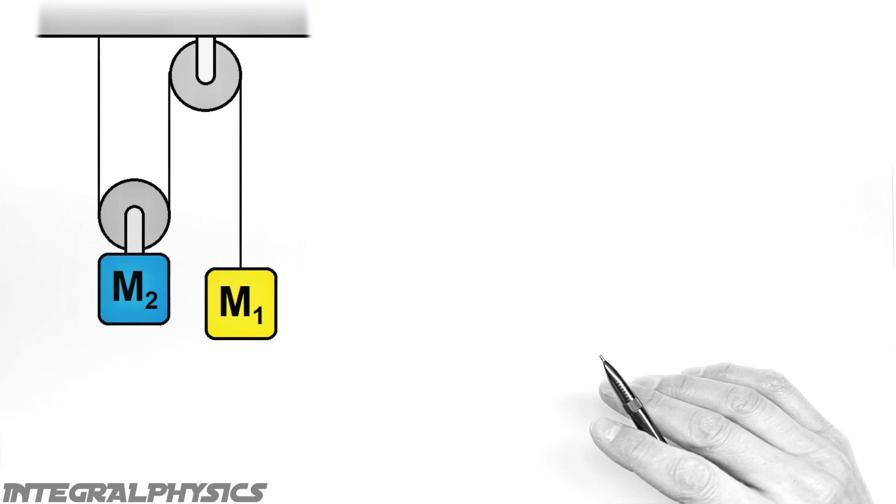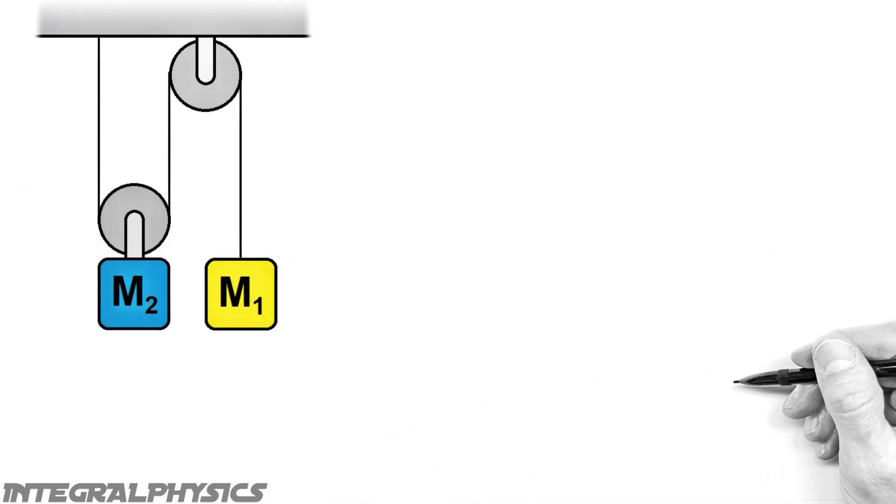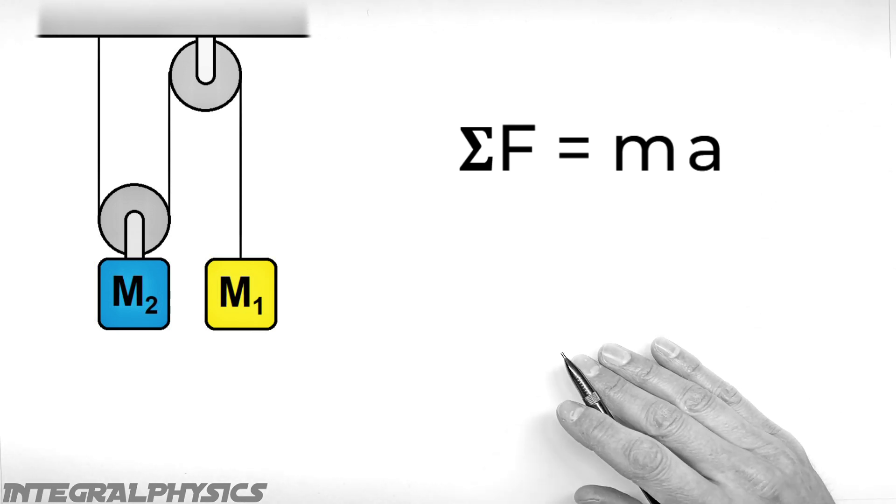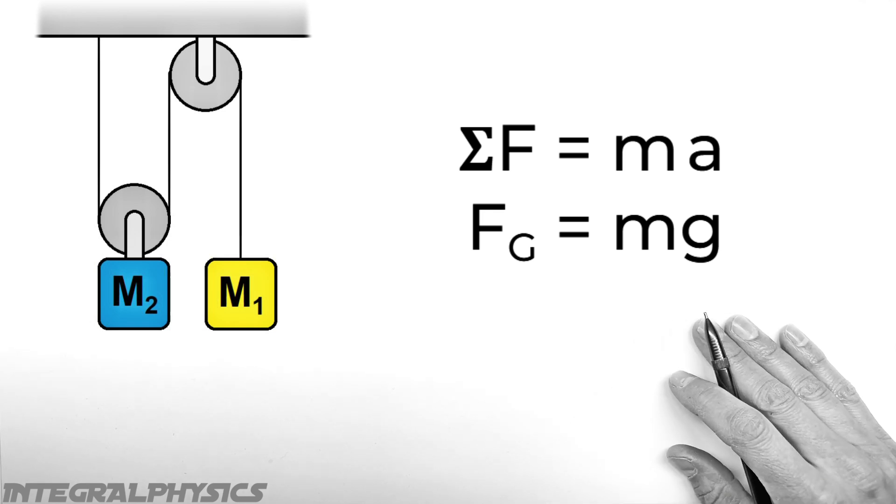Now the nice part of this problem is that this entire problem can be solved using just two equations. The first being Newton's second law, that is F equals ma, and the second being the force by gravity equals the mass of an object times the acceleration due to gravity.